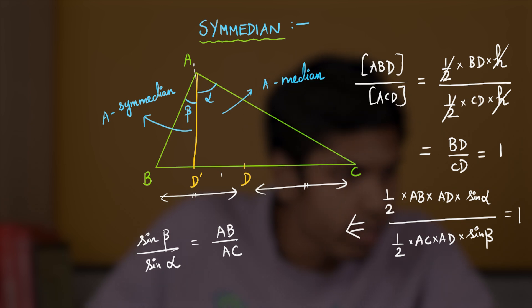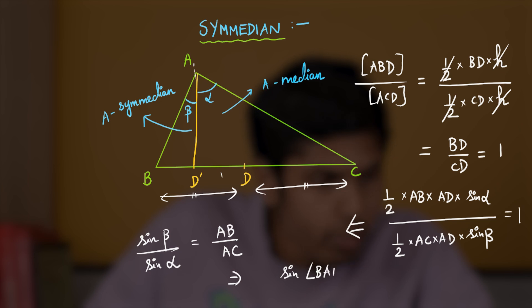Therefore, for a C-median, we may conclude sine of angle BAD′ by sine of angle CAD′ equals AB by AC.